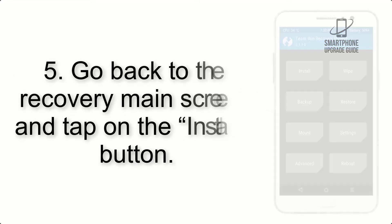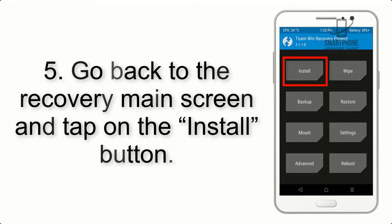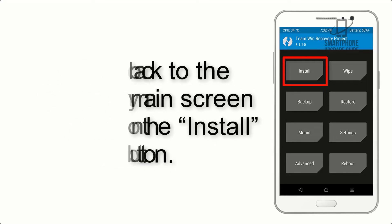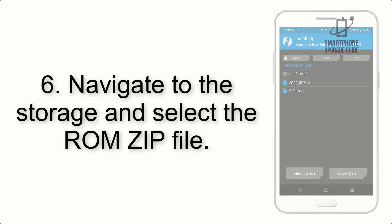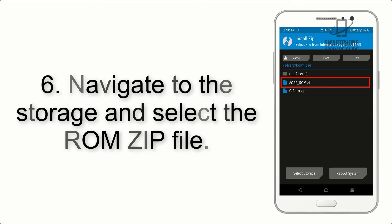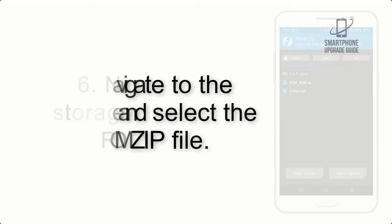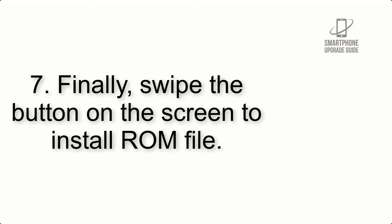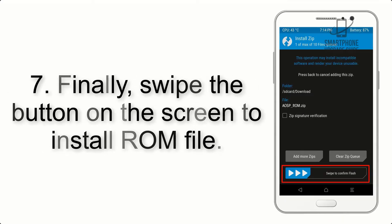Step 4: Swipe the button to wipe the device. Step 5: Go back to the recovery main screen and tap on the Install button. Step 6: Navigate to the storage and select the ROM zip file.